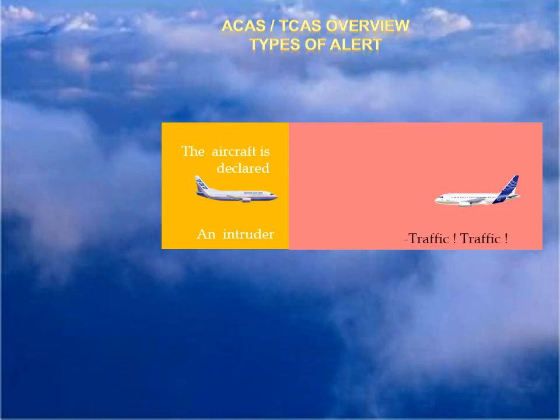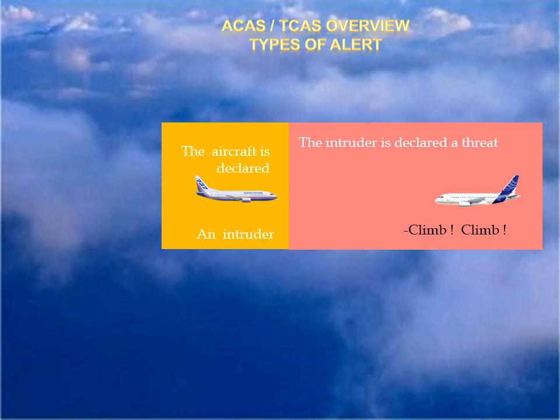Assuming both aircraft are TCAS-II and Mode S equipped, the two systems can also coordinate their RAs via the Mode S data link to select complementary resolution senses. Otherwise, TCAS-II can use altitude information from Mode S signals to calculate RAs based on observations of the target aircraft's maneuvers. The time taken for TCAS to detect a risk of collision, calculate an avoidance maneuver and communicate this to the pilot via an RA is less than 1 second.